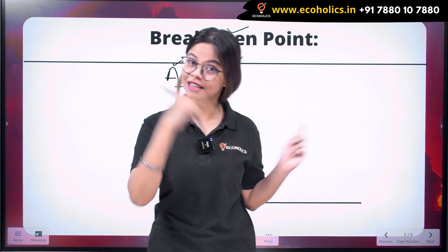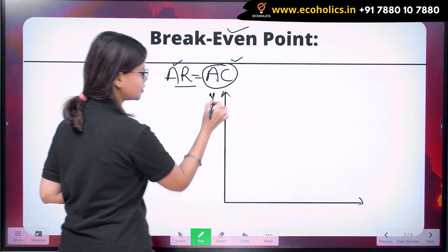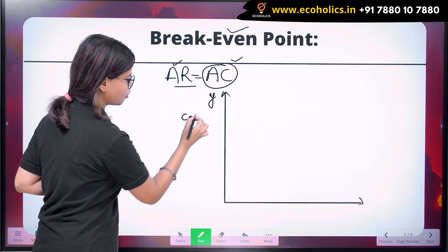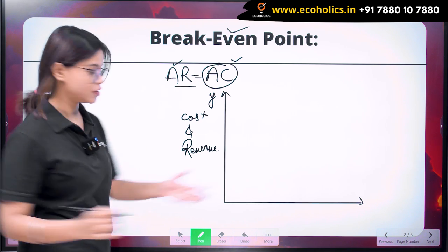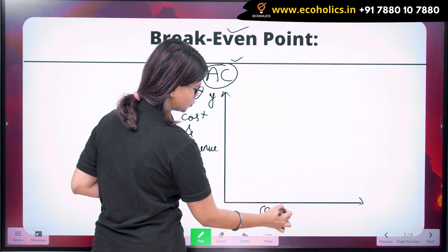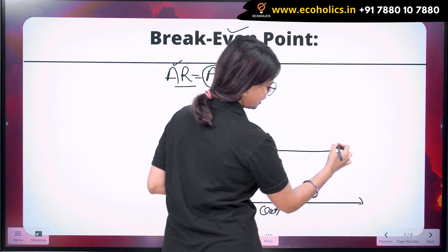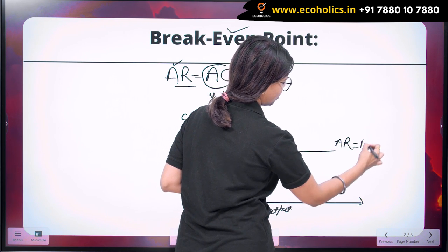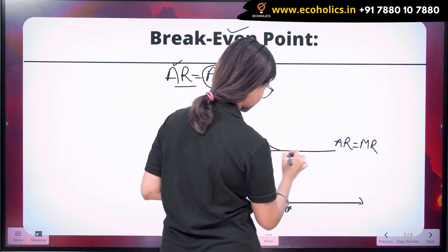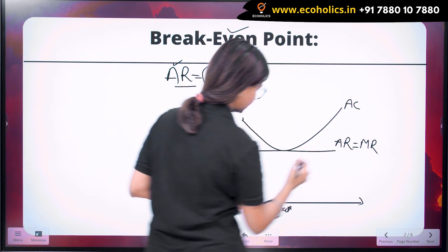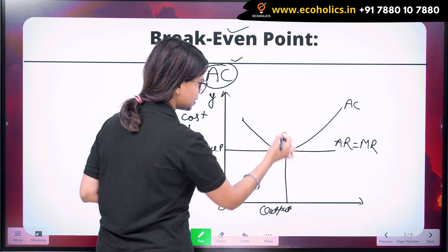Now let's understand the same point via a graph. On the y-axis, we take cost and revenue, and on the x-axis we take output. Let's draw the curves. Here we have the AR or MR line — this is your price line. And let's draw the AC curve. This point where the AR line intersects the AC curve is your break-even point.